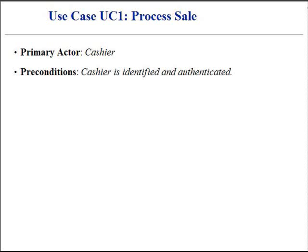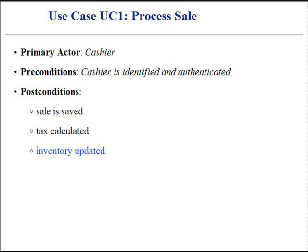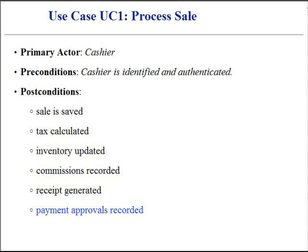Primary actor: cashier. Pre-conditions: cashier is identified and authenticated. Post-conditions: sale is saved, tax is correctly calculated, accounting and inventory are updated, commissions are recorded, receipt is generated, and payment authorization approvals are recorded as well.